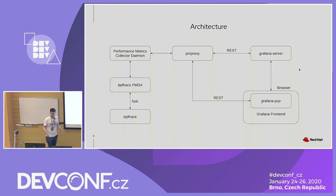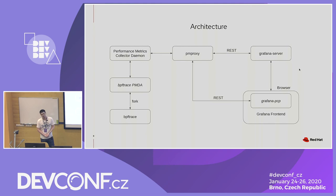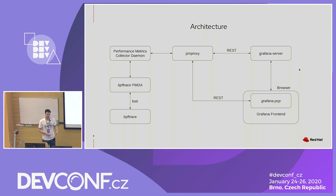The architecture of the full project is as follows. On the left side we have the PCP part — there's a collector daemon which collects data from the agents. We call the agents Performance Metrics Domain Agents. This BPFtrace Performance Metrics Domain Agent starts BPFtrace on the fly when you want data, and if the data is not requested anymore — for example, if you close Grafana — it automatically stops BPFtrace.